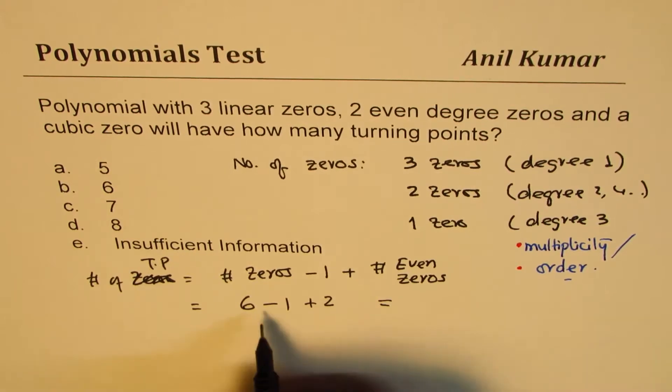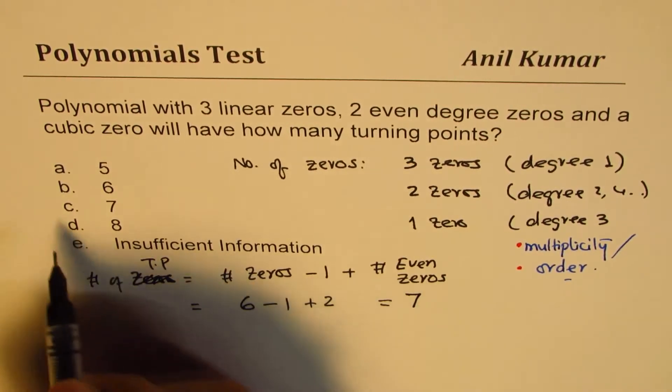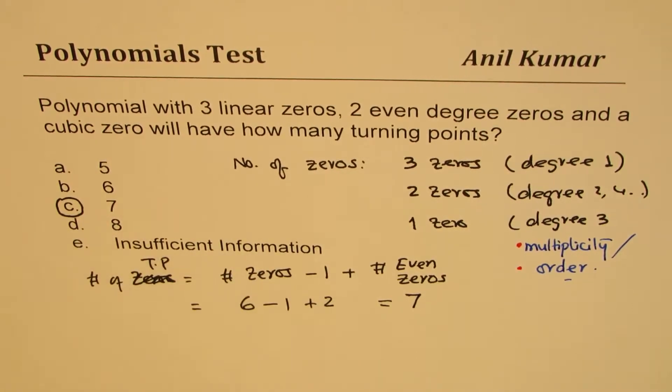So the total number is equal to six minus one is five, five plus two is seven. So seven is the right answer.